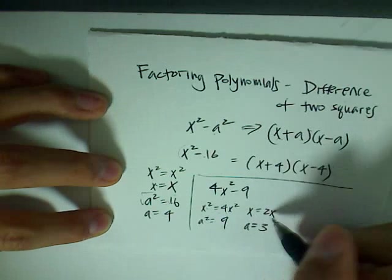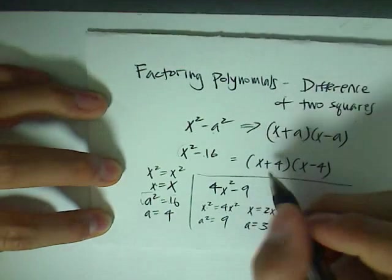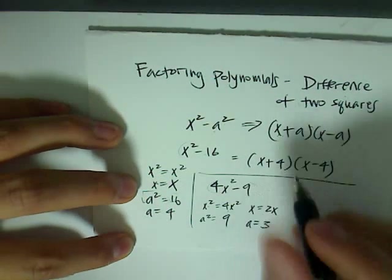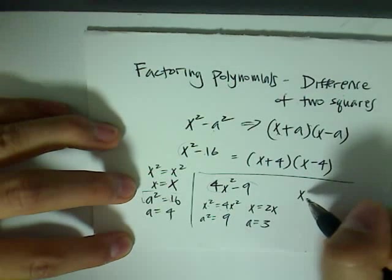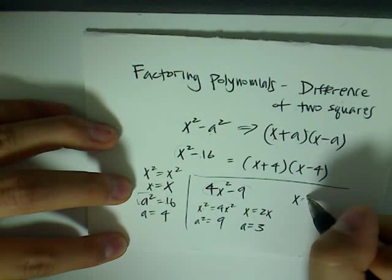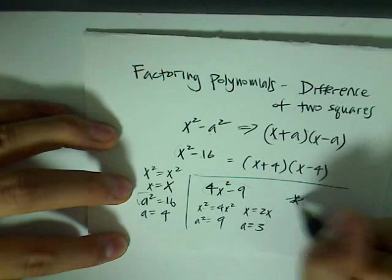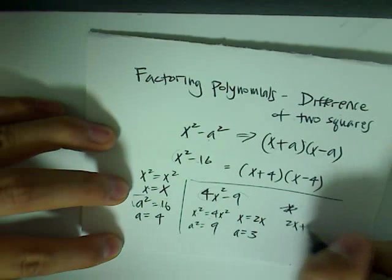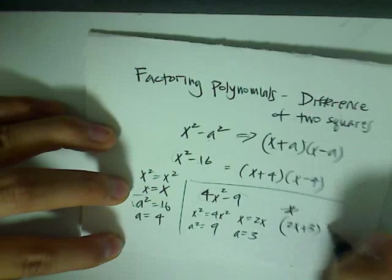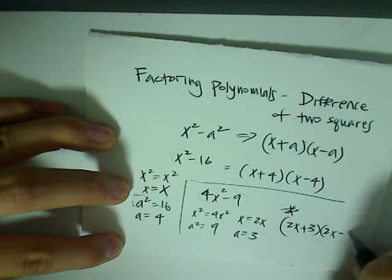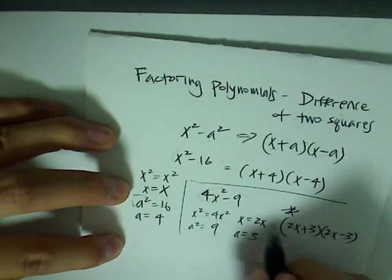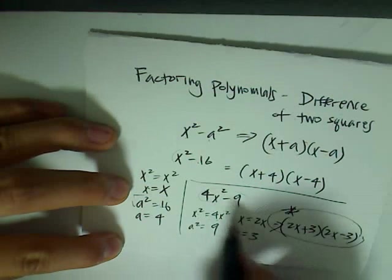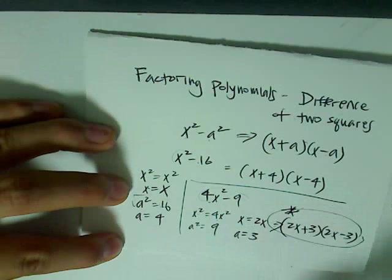So now that we have x and a, we can factor this equation. So you have x equals to 2x, so you have 2x plus 3 and 2x minus 3. And this right here is the fully factored form of the polynomial 4x squared minus 9.